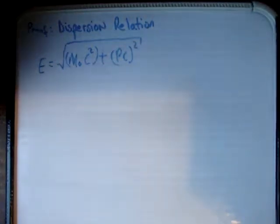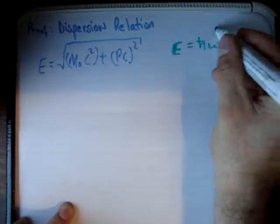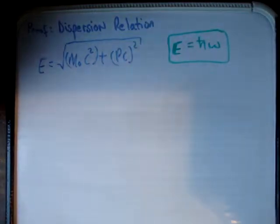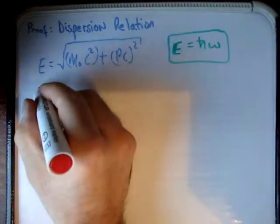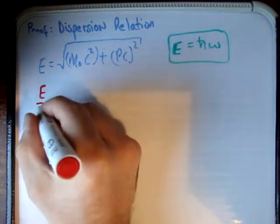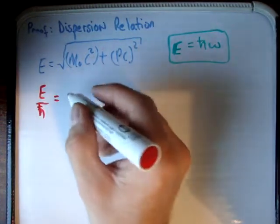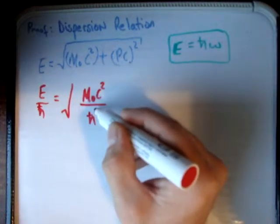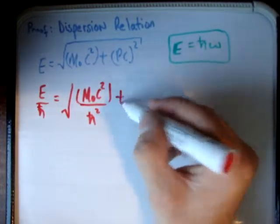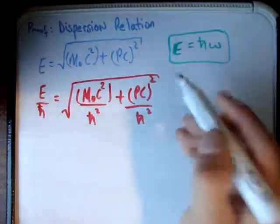We know that E is equal to h-bar omega — the energy equals Planck's constant over 2 pi multiplied by the angular frequency. So let's substitute that in. We get e over h-bar equals the square root of m₀c² over h-bar all squared plus pc squared over h-bar squared, and that equals omega.